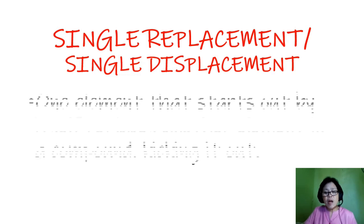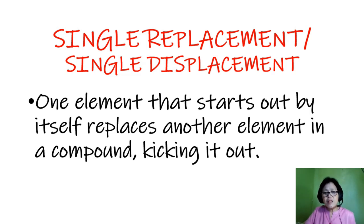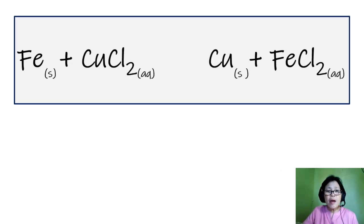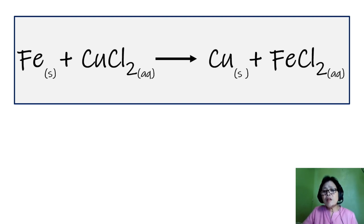Now let's move on to the single replacement reaction. In a single replacement reaction, one element that starts out by itself replaces another element in a compound, kicking it out. For example, we start with iron — the element by itself — and iron combines with copper chloride, CuCl2. Iron kicks copper out, so copper ends up by itself and iron takes the place of copper, pairing with chlorine. Iron and chlorine are now paired up.